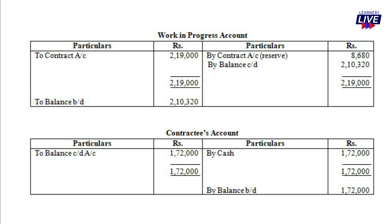For the contractees account, we have the cash received transaction. Cash account is debited and contractees account is credited. From the contractee's point of view, we have a complete ledger. The credit side shows cash received: $172,000. The balance is carried down.